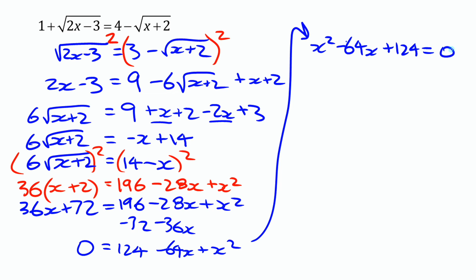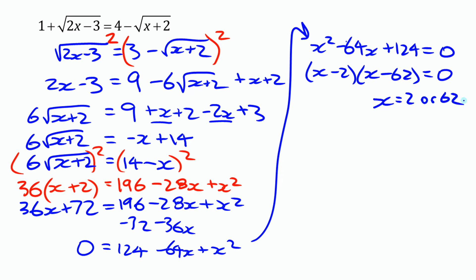You can try to factor that or use the quadratic formula. It does factor — into (x minus 2)(x minus 62). If you didn't see that it factored, the quadratic formula gives the same results. The solutions are x equals 2 or x equals 62.